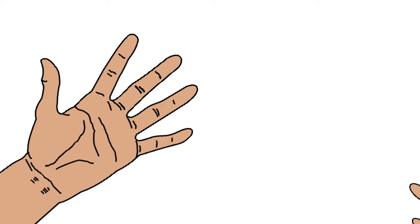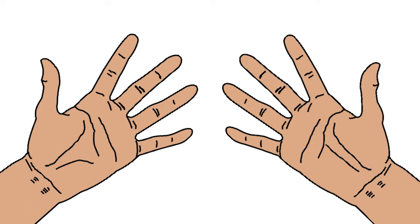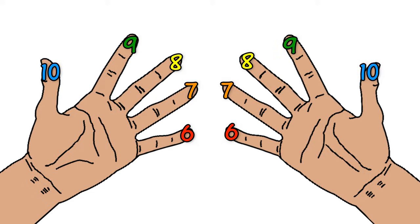First of all what you must do is have your hands with your palms facing towards you and your fingers spread out. Then what you do is you assign numbers to each of your fingers starting from 6 with the pinky finger ending at 10 when you reach the thumb. So we have 6, 7, 8, 9 and 10. Once we've assigned the numbers to the fingers, what we can do is we can start doing the calculations.